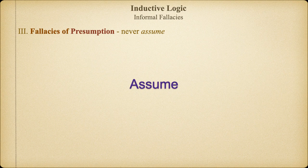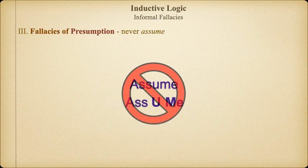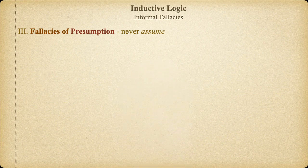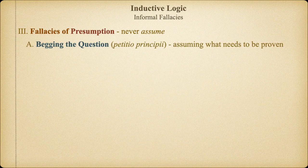Now, we all learned in second grade what happens when we assume — you make an ass of you and me. So let's always be on guard against making assumptions in our arguments. It was our old friend Aristotle who first warned us against assuming what we were supposed to be proving. Whether we call it circular reasoning, petitio principii, or begging the question, it is always fallacious to assume the truth of our conclusion as evidence for its truth.